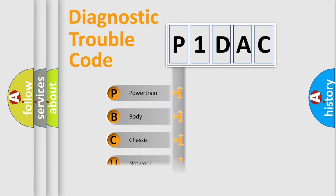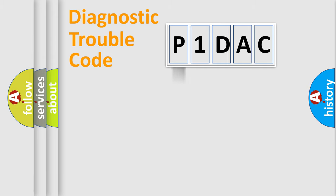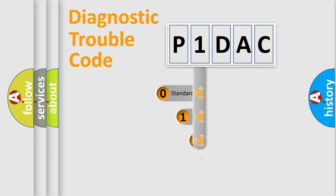We divide the electric system of an automobile into four basic units: Powertrain, Body, Chassis, and Network. This distribution is defined in the first character of the code.